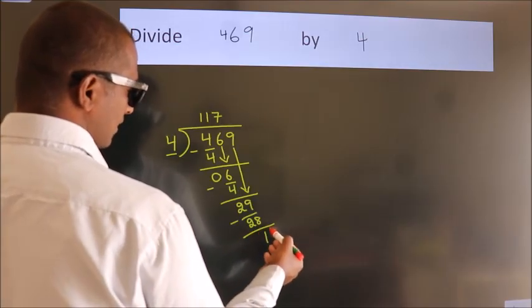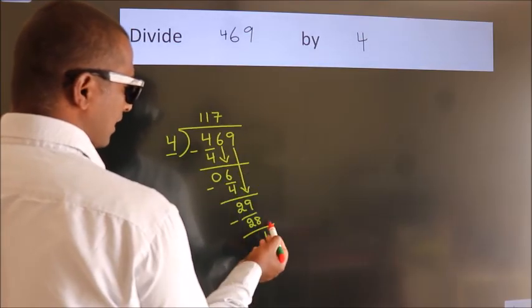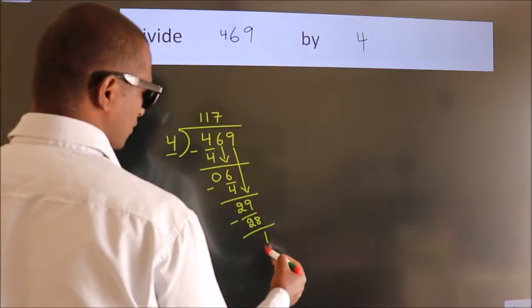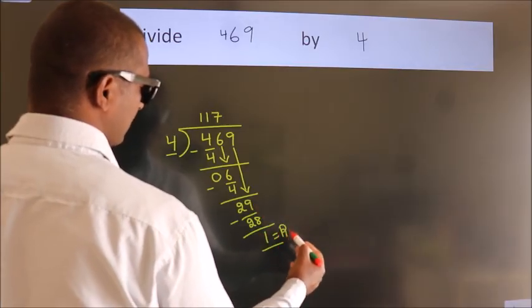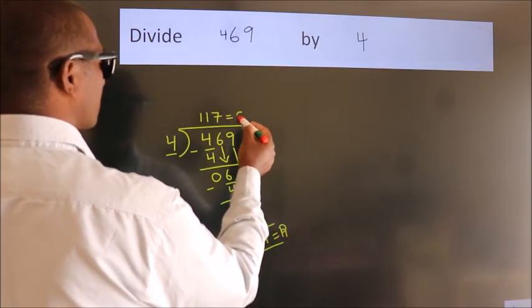After this, no more numbers to bring down. So we stop here. This is our remainder. This is our quotient.